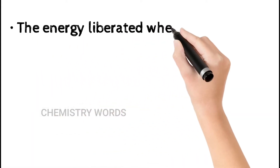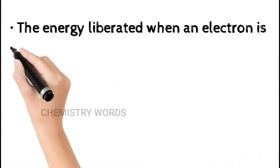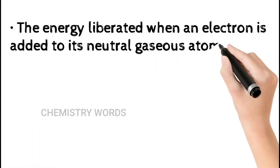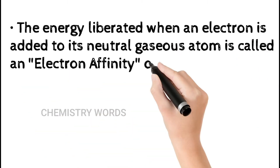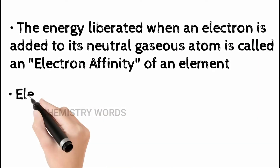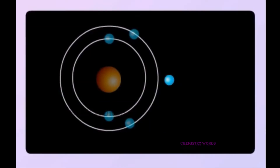The energy liberated when an electron is added to a neutral gaseous atom is called electron affinity. If you take any atom in a neutral state and in gaseous form, whenever an electron is added to that atom, it will release some amount of energy, which is known as electron affinity.